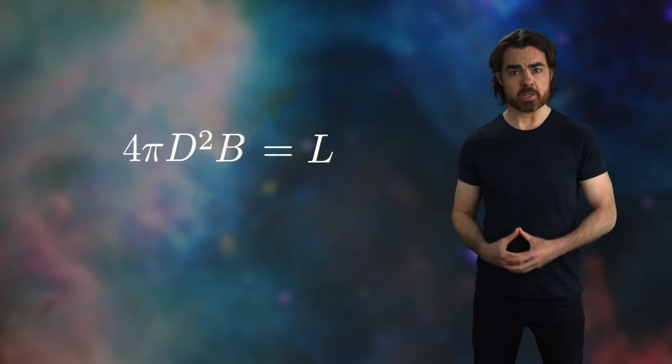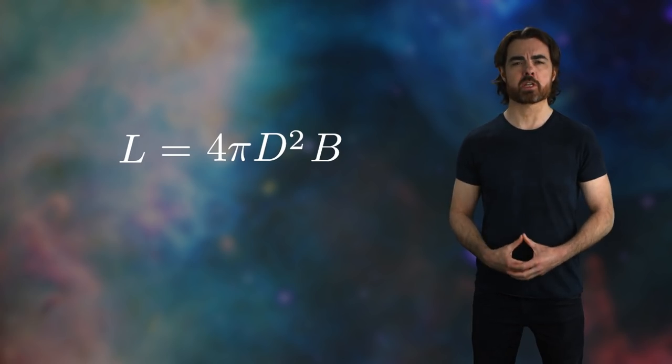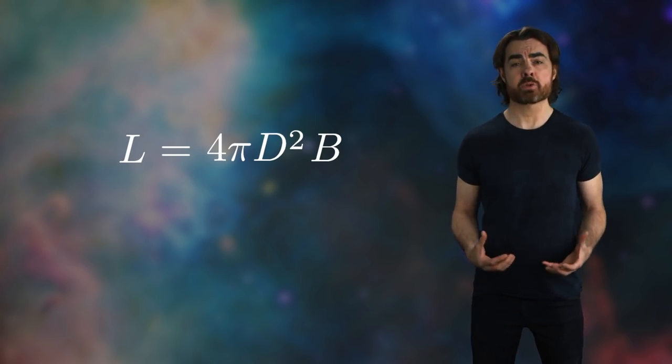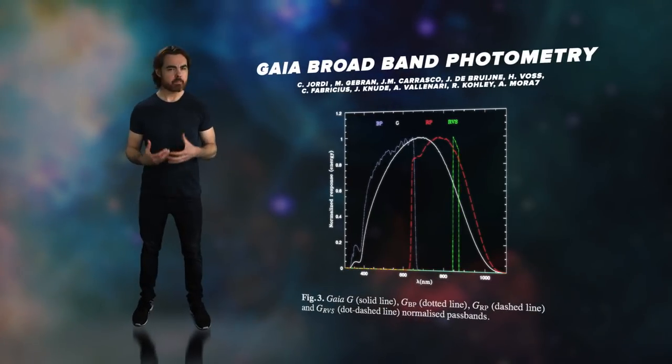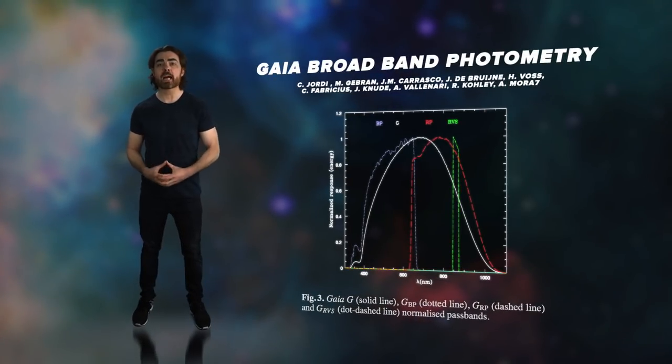Knowing the distance to a star is critical for determining its other physical properties. For example, combining distance with a star's apparent brightness gives us its true luminosity. And Gaia measures brightness with incredible accuracy. It measures brightness in both the red and blue parts of the electromagnetic spectrum. Combining those gives us the color of the star, which in turn gives us its surface temperature.